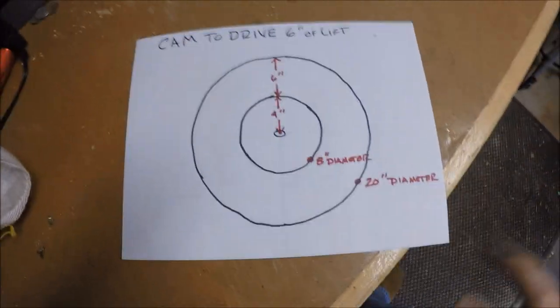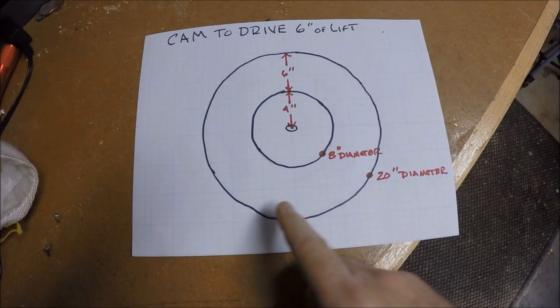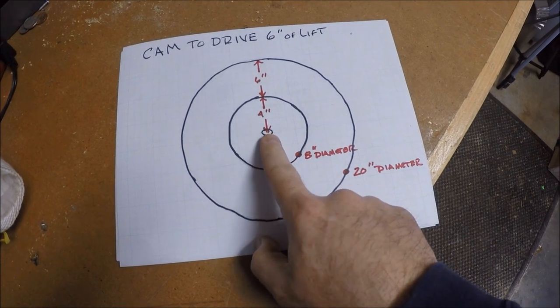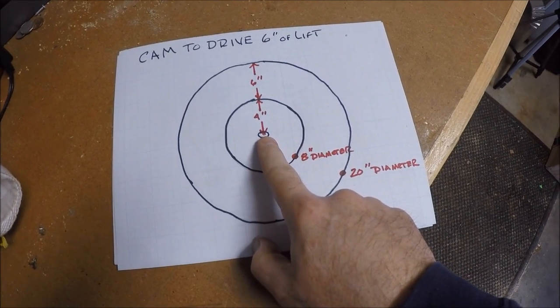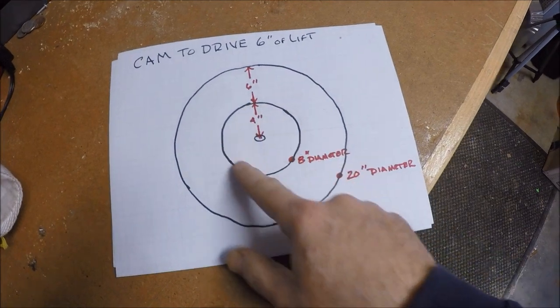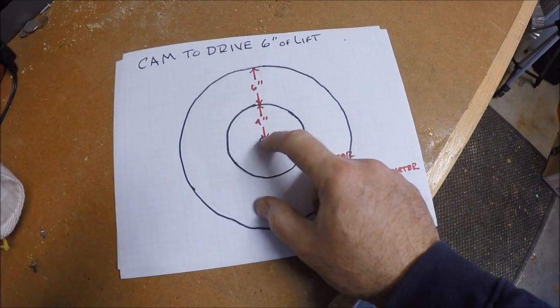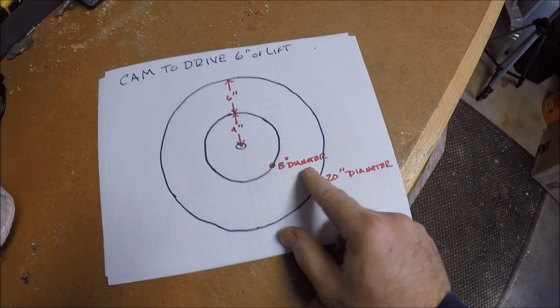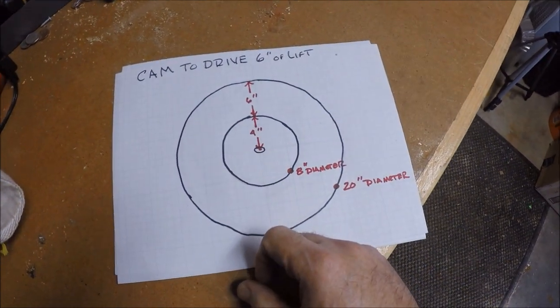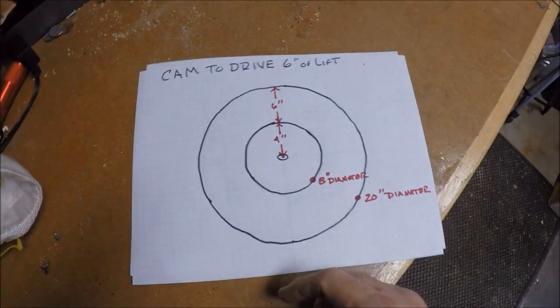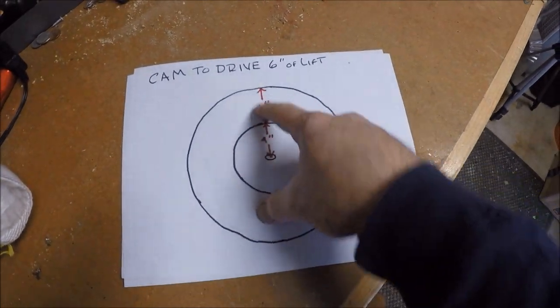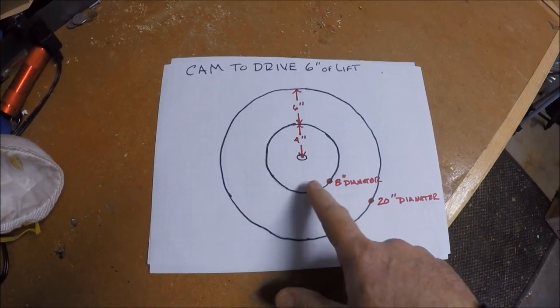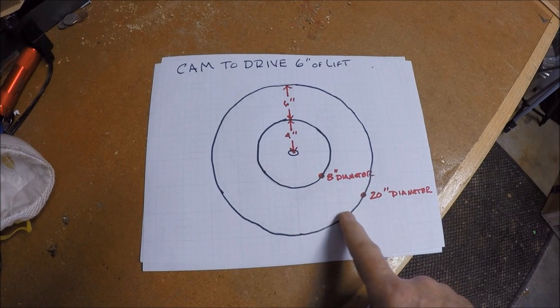So it starts off on that piece of plywood. I drew two circles. The first circle was four inches. So that's the center of the shaft for the gearbox. Took and drew a four inch radius circle, so a total eight inch diameter. And then I drew another circle representing the maximum height, which is another six inches for a total 20 inch diameter circle.